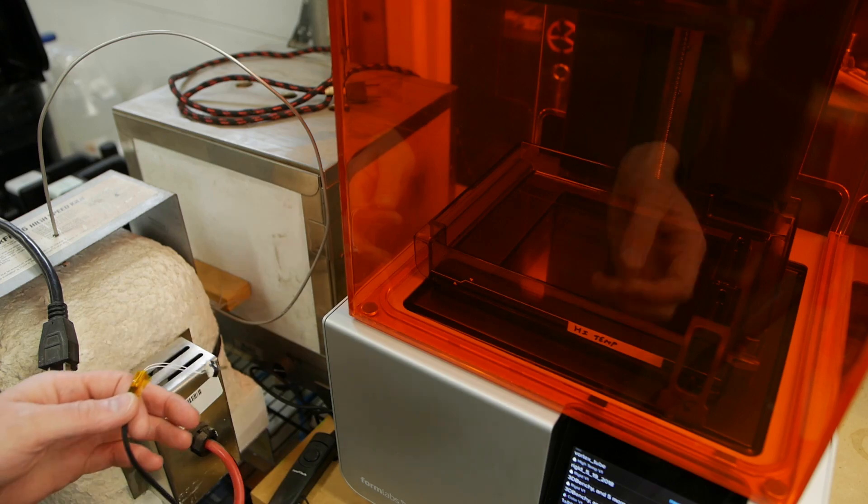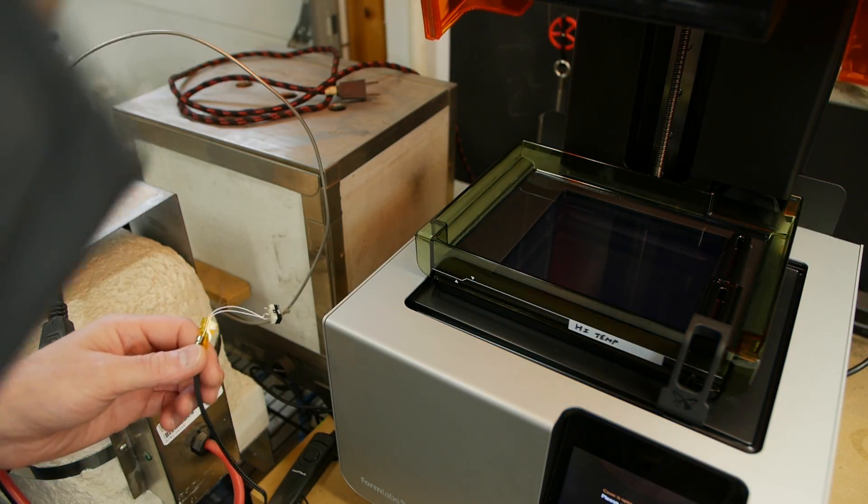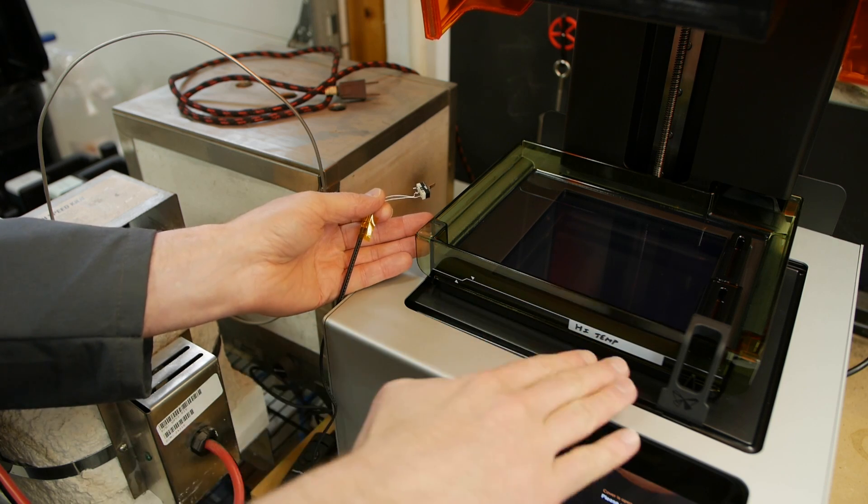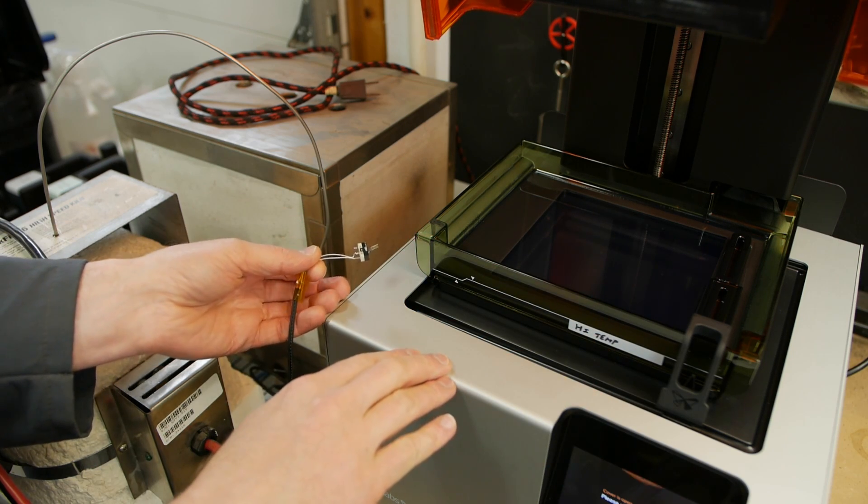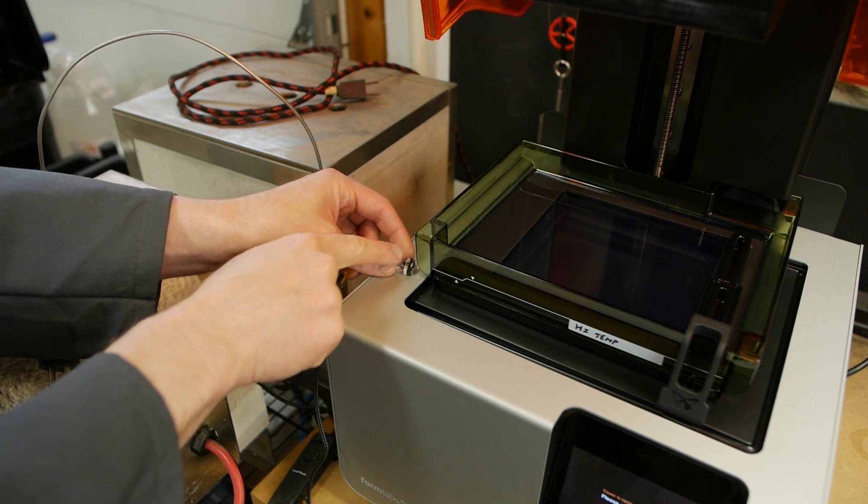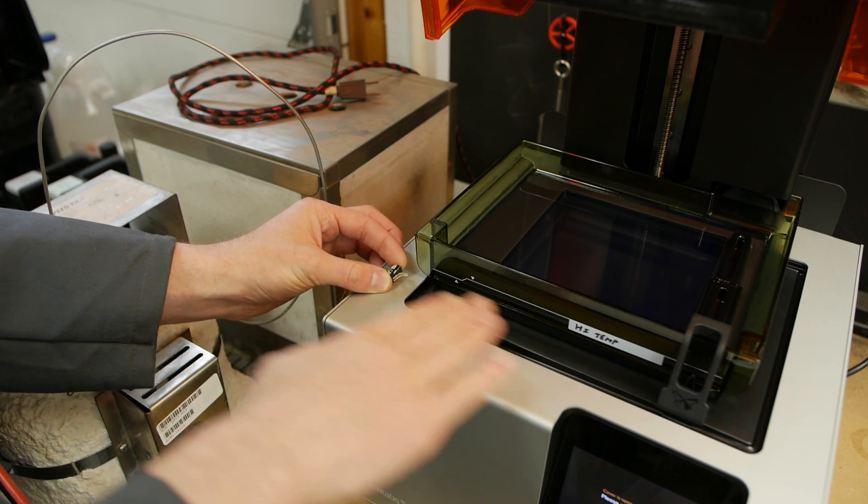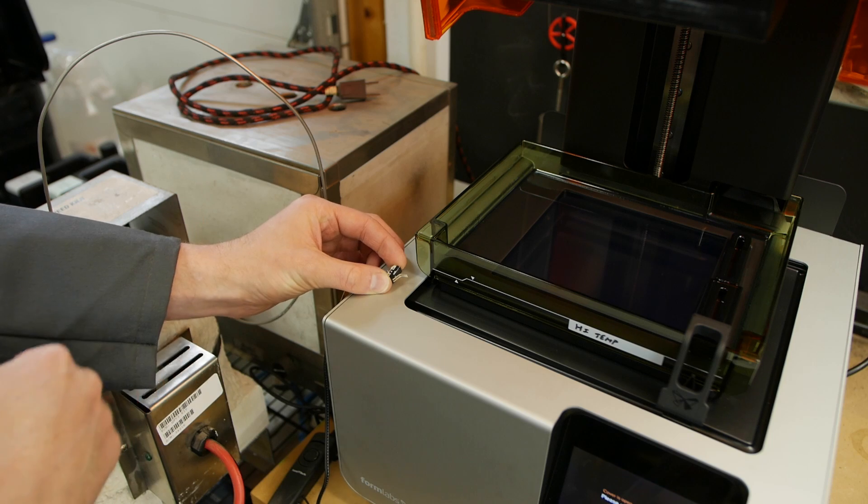When the printer is running the lid should be closed but I'm going to open it up just so you can see this. When the printer is running this tray moves back and forth as part of the normal print process and conveniently that means that we can put a little micro switch here and every time the tray comes over to finish a layer it bumps the micro switch.